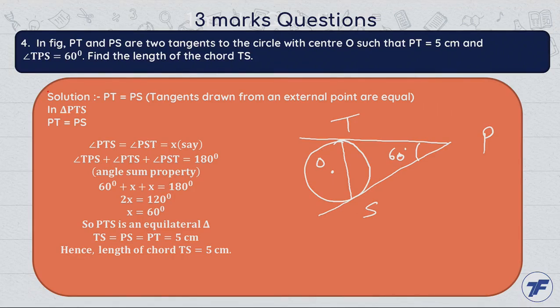Now let us come to question number 4. In the figure, PT and PS are two tangents to the circle with center O such that PT equals 5 cm and angle TPS equals 60 degrees. Find the length of the chord TS. Here we have to find the length of chord TS, whose end points are the points of contact.